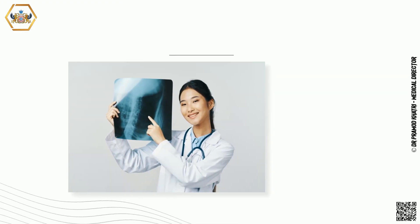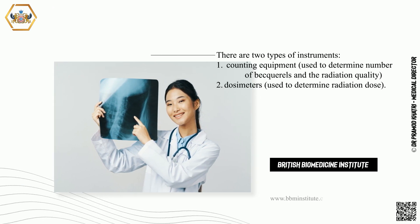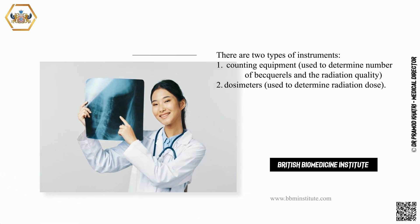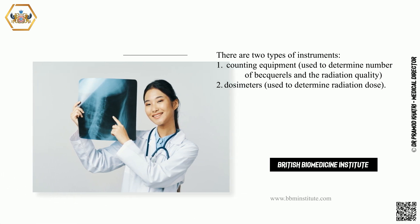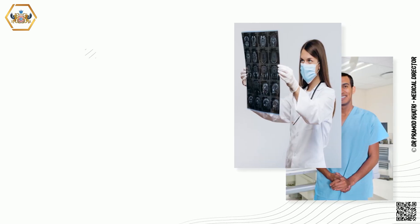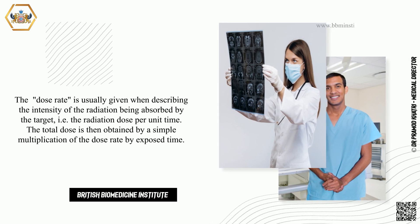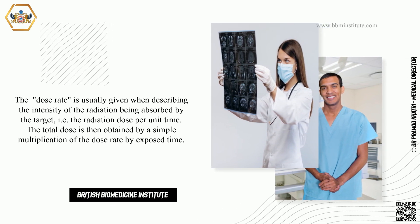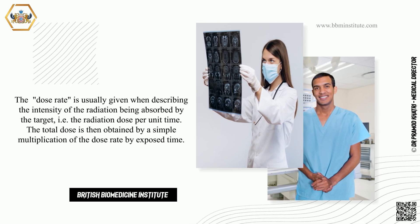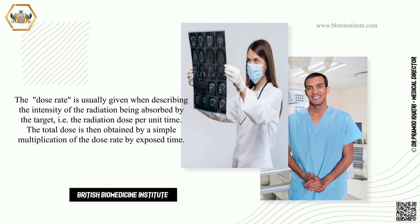There are two types of instruments. First, counting equipment, used to determine number of becquerels and the radiation quality. Second, dosimeters, used to determine radiation dose. The dose rate is usually given when describing the intensity of the radiation being absorbed by the target, that is the radiation dose per unit time. The total dose is then obtained by a simple multiplication of the dose rate by exposed time.